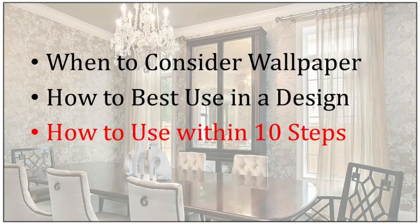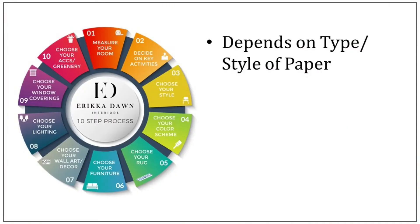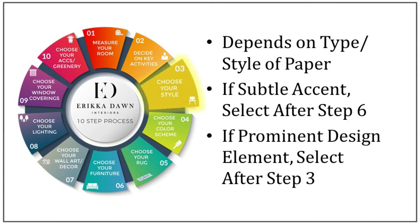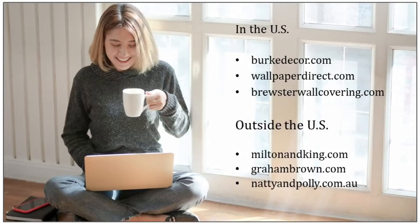Now let's talk about how you incorporate the selection of wallpaper within the 10-step process. If it's going to be a more subtle paper, I'll usually select it after I've selected the furniture. However, if I plan on having the wallpaper be a more prominent design element with a strong pattern and color, then I will likely select it after I've selected my style, as the wallpaper will help to determine or dictate the color scheme for the room.